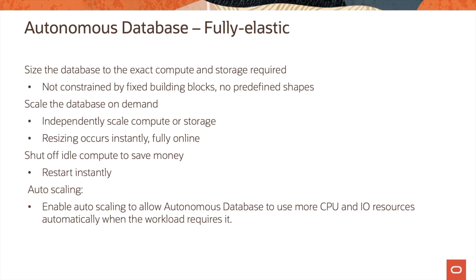Autonomous Database is fully elastic. Customers can size the database to the exact compute and storage required; they are not constrained by fixed building blocks and don't have to worry about predefined shapes. They can scale the database on demand, independently scaling compute or storage. These resizing operations occur instantly with the database fully online — there is no downtime. Customers can shut off idle compute to save money and restart instantly whenever needed. Customers can also enable auto-scaling to allow Autonomous Database to use more CPU and I/O resources automatically when the workload requires it.